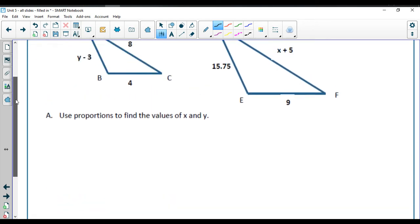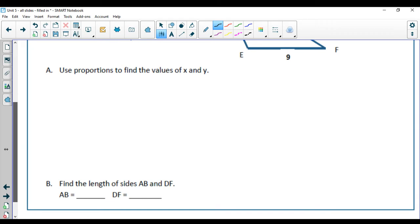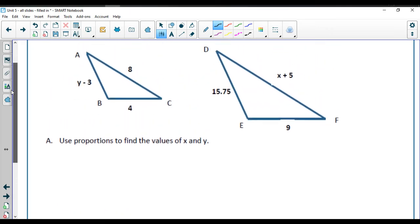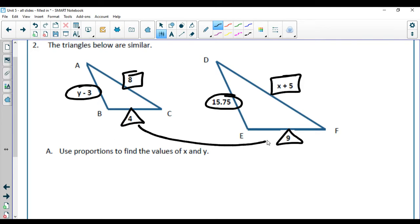In number 2, the triangles are similar. We're going to use proportions to find the values of x and y and then plug that in to get the side lengths. Looking at these, I have these two go together, these two go together, and these two go together. The 4 and 9 both have numbers. I'm going to call this one my top, this one my bottom, so I start with 4 over 9 as the start of my proportion for each of them.